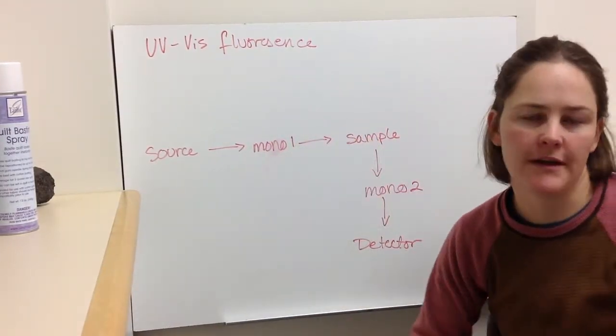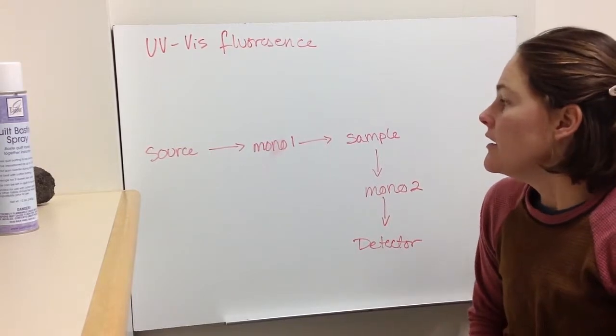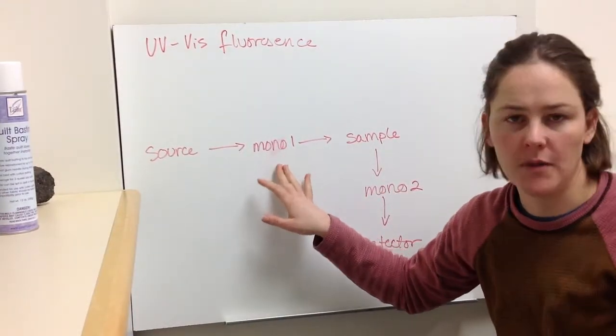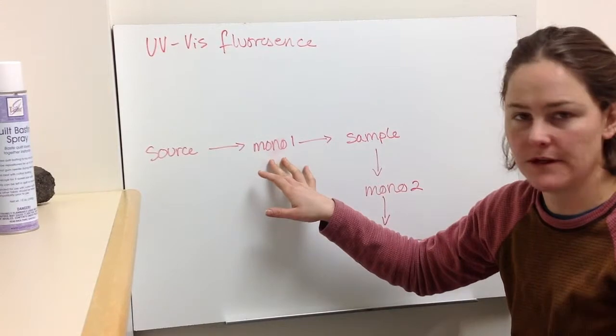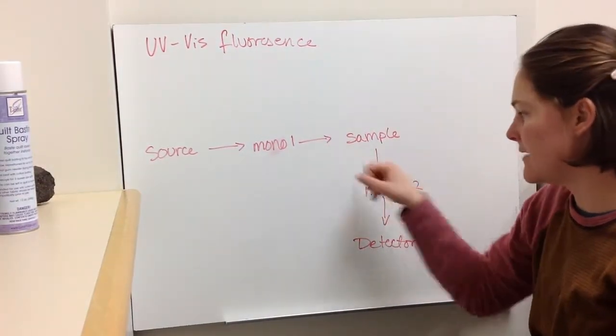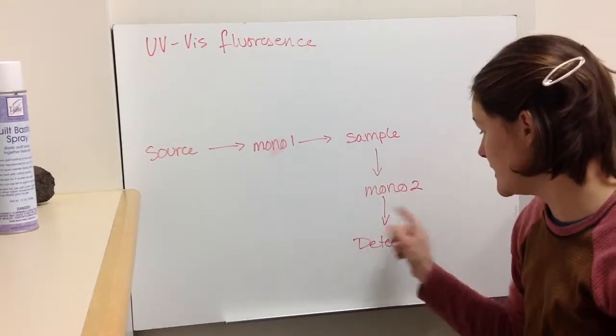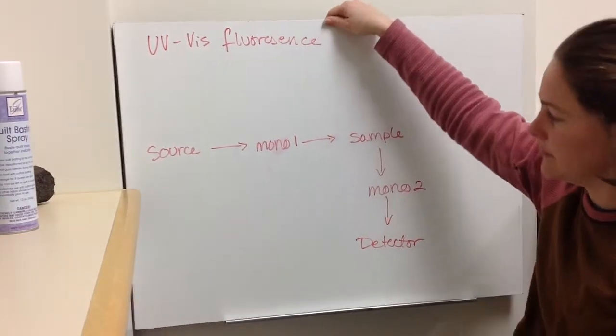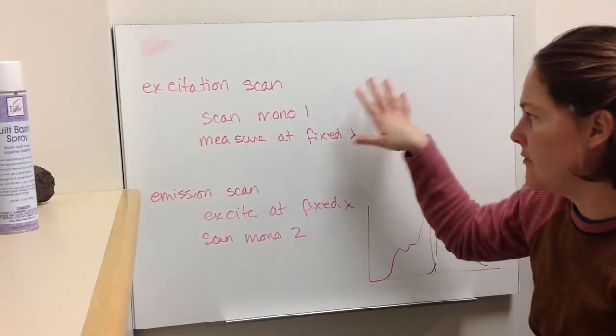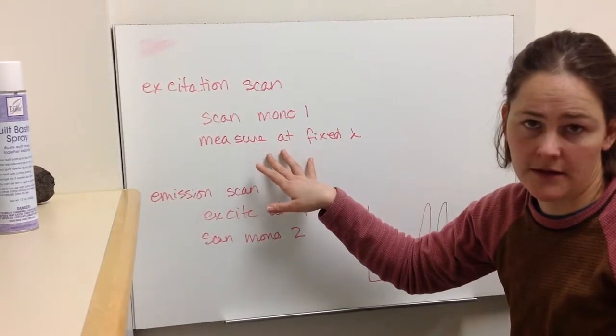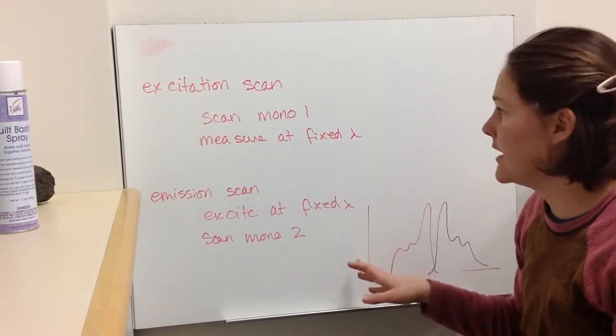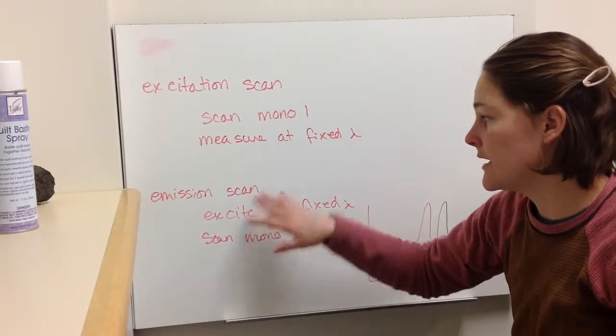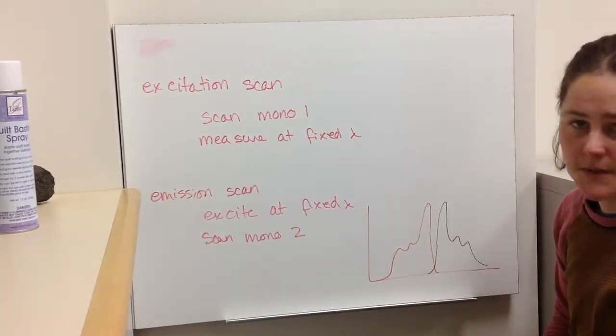All right, one more thing that I wanted to mention is that you can also do UV-Vis fluorescence. So you basically have the same source. You have mono number one that you can fix, which is before the sample, and then you have the sample, and then you have a second monochromator after the sample, and then the detector. So you can either scan mono one or mono two. If you scan mono one, then you measure at a fixed wavelength, so you have to fix mono two, and that way you can do an excitation scan, or you can excite at a fixed wavelength and then scan mono two and get an emission scan. And so there's a picture of this in your book.